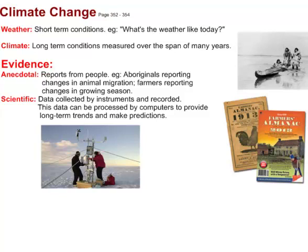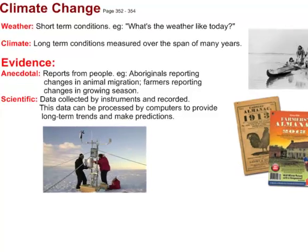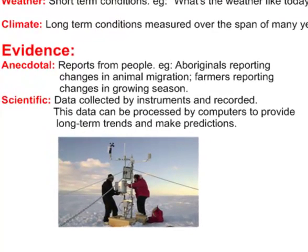The other kind of data is scientific data, where we use instruments to collect and record information about climate. Here we see a weather instrument station in the Arctic. This data can later be processed by computers to give us long-term trends and make predictions.